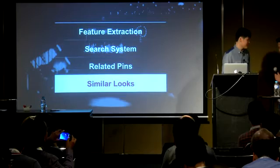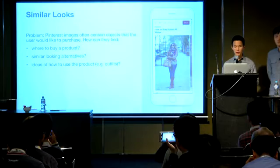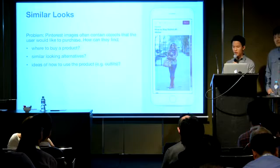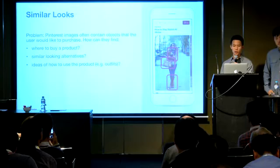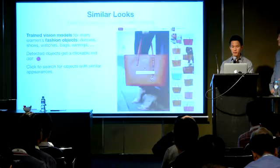With Similar Looks, the problem we were trying to solve is that many images on Pinterest contain lots of objects, but it's difficult for the user to find more information about those objects. Women's fashion is one of the largest categories on Pinterest and this is a common frustration — users might see a scarf, a bag, or boots in an image but can't find out where to buy them. They might also see a product but want to find alternatives that look similar, or find ideas of how to use the product in an outfit. So we built a search feature for visually similar objects — we do object-to-object visual matching.